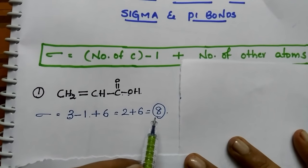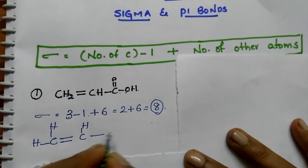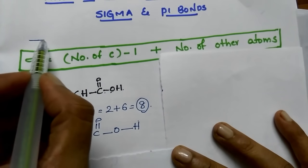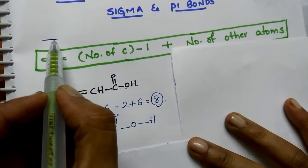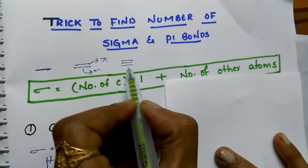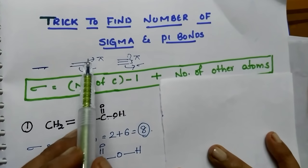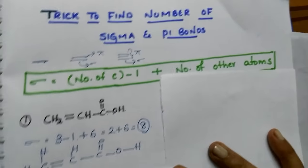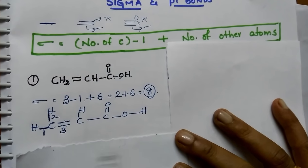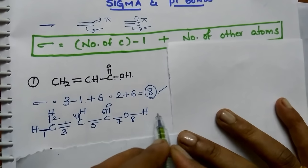Let's calculate whether we got the correct answer or not. Remember: if only one bond is present, it is a sigma bond. If 2 bonds are there, 1 is sigma and the remaining is pi. If 3 bonds are there, 1 is sigma and the remaining 2 are pi. Counting manually through the structure gives us 8 sigma bonds — so we got the correct answer.